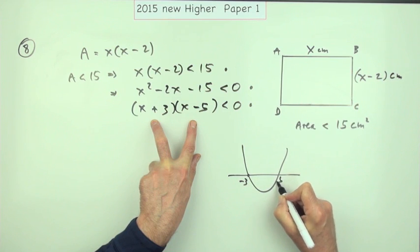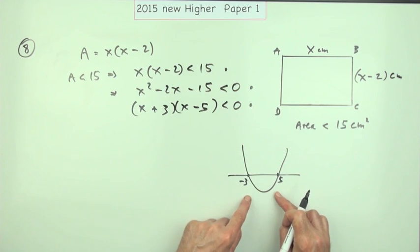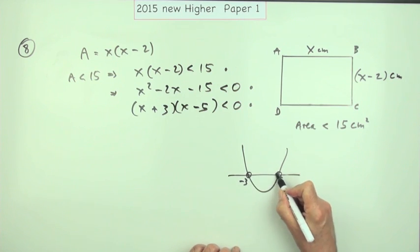And it's this picture you should use to solve the equation. So quite clearly, looking at this, when is this thing less than zero? It's this part here. I'm not including those points, but it'll be anything between them.